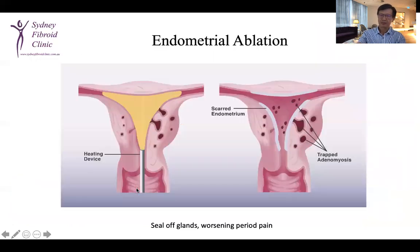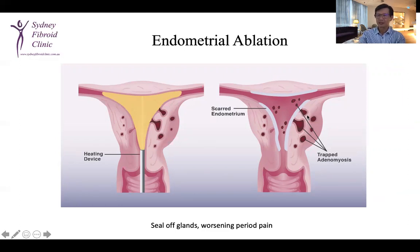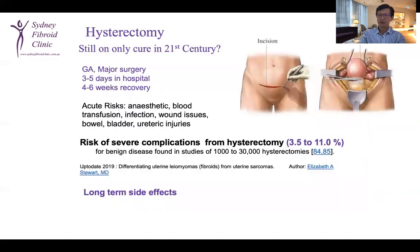How about ablation? Endometrial ablation uses heat energy to destroy the endometrium. In the process, more adenomyotic glandular tissue will be trapped, and therefore sealing of these glands can worsen period pain. In my opinion, endometrial ablation is contraindicated in adenomyosis.